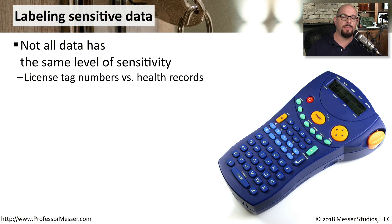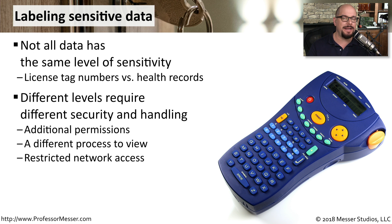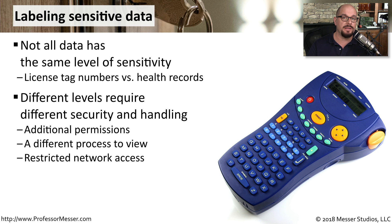In your organization, you're going to be working with lots of different kinds of data, but not all of the data has the same level of sensitivity. For example, a license tag number may not be as important to keep confidential as someone's health records. Different types of data need to have different types of security and handling associated with them. There may be additional permissions that you add to a particular type of data, or there may be different business processes that you have in place that would then allow someone access to that data.